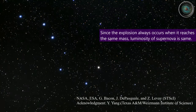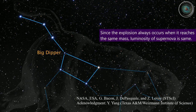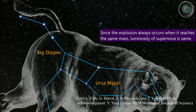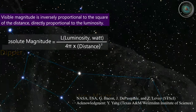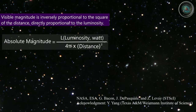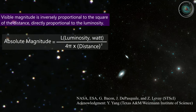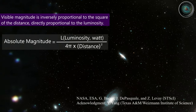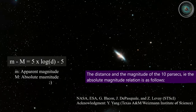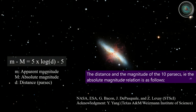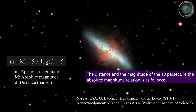Since the explosion always occurs when it reaches the same mass, the luminosity of all Type 1A supernovae is the same. Visible magnitude is inversely proportional to the square of the distance and directly proportional to luminosity. The distance and magnitude at 10 parsecs defines the absolute magnitude relation.